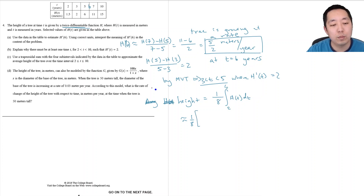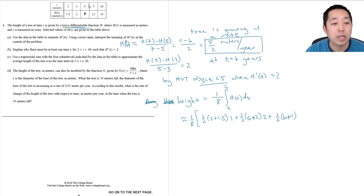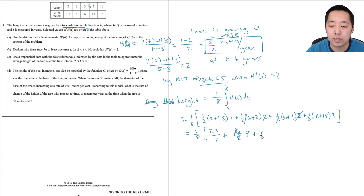The trapezoidal sum takes the width of each interval times the average of the heights at the endpoints. First interval: (1/2)(2 + 1.5) times width 1. Next interval from 2 to 6, width 2, average of those heights. Third from 6 to 7, also width 2. Plus the average of 11 and 15 with width 3 (from 7 to 10). This gives 1/8 times [3.5/2 + 8 + 17 + 36], simplifying to 1/8 times the sum of those trapezoid areas.